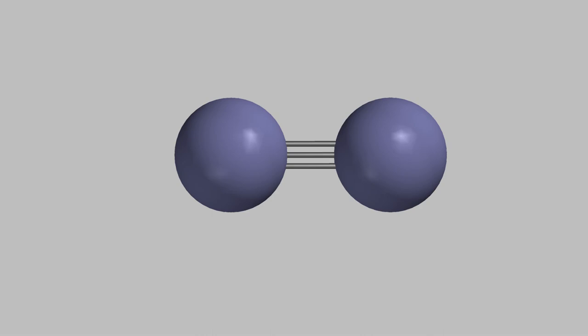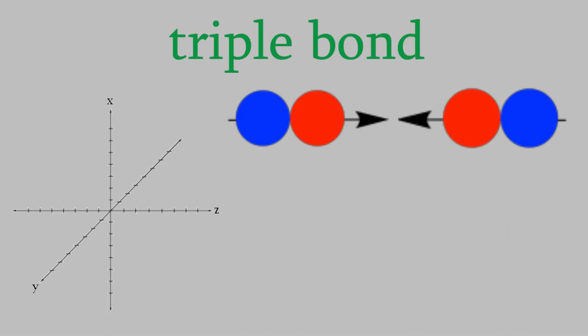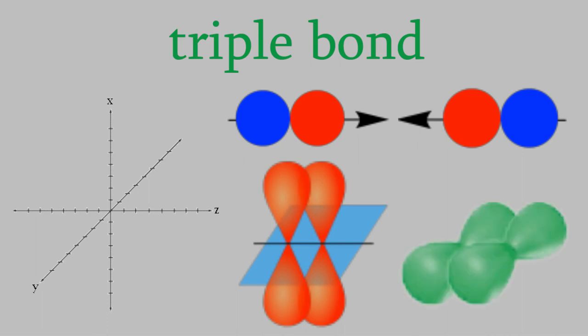In a triple bond, there are a total of three bonds. The first two are the same as in a double bond. One's a sigma bond, made from two overlapping orbitals oriented along the z-axis. And the second is a pi bond, made from two orbitals parallel to the x-axis. In the third bond, we have overlap between two p orbitals oriented in the direction of the y-axis, which is the one we haven't used yet.